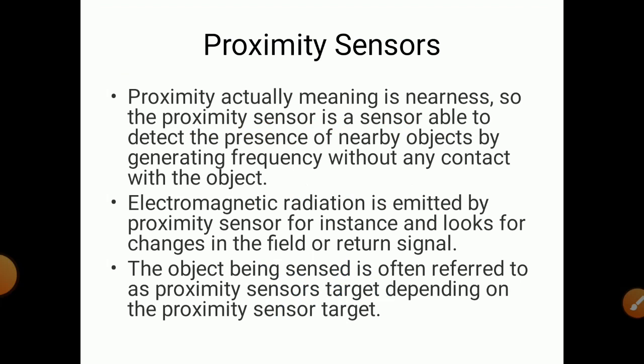So what is a proximity sensor? Proximity actually means nearness. The proximity sensor is a sensor able to detect the presence of nearby objects by generating frequency without any contact with the object. We can detect the presence of a nearby object without contacting that object. This is the main aim of proximity sensors.